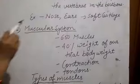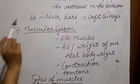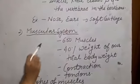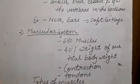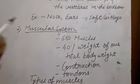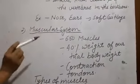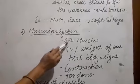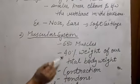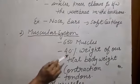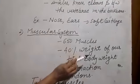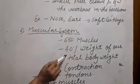Next point is the muscular system. Our body has 650 muscles, and their weight is 40% of our body weight.